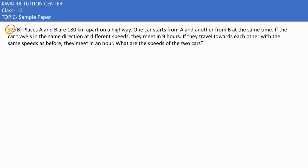Let's have a look at question 32. Here it is given that A and B are two different places, and they are 180 km apart on a highway. One car starts from A and another from B at the same time.